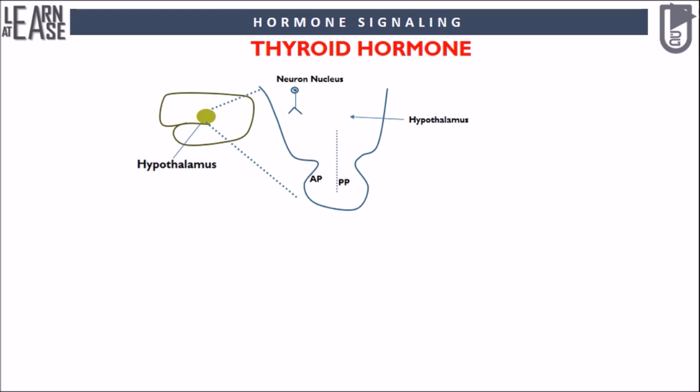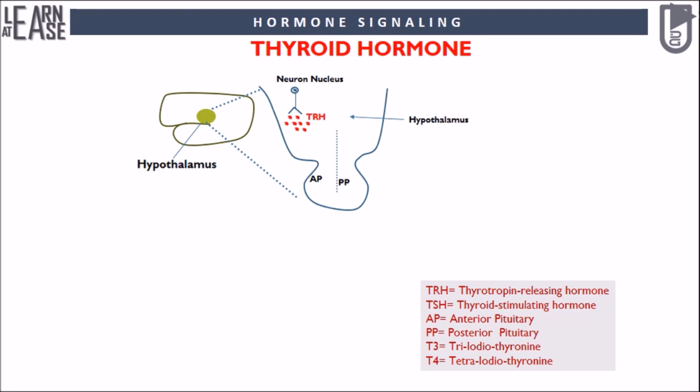The image shows the line diagram of the brain and hypothalamus. The neuron nucleus located in the hypothalamus produces thyrotrophin releasing hormone, abbreviated as TRH, also called thyrotrophin releasing factor or thyroliberin. TRH travels to the anterior region of the pituitary, known as anterior pituitary, through a special type of venous system known as the hypophyseal portal.